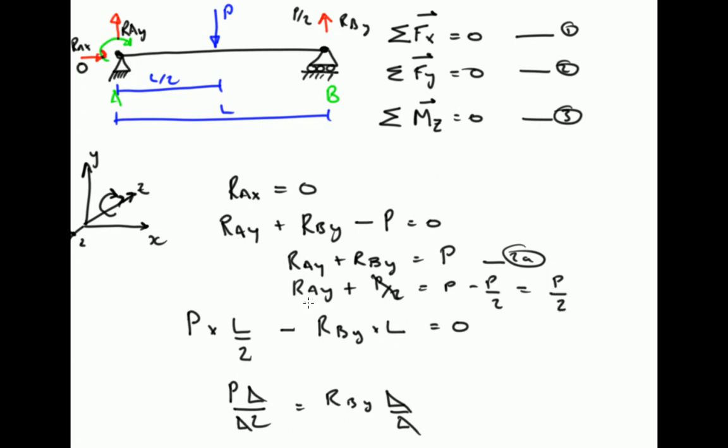So R_Ay also equals P divided by 2, we've solved all three unknowns. This is actually fairly intuitive because if we put the P in the middle of that beam, it's not surprising that it distributes and is reacted by an equal force, both at point A and at point B, as those two points are equidistant from the load P. So it's fairly intuitive, but we've proved it using the equations of static equilibrium.